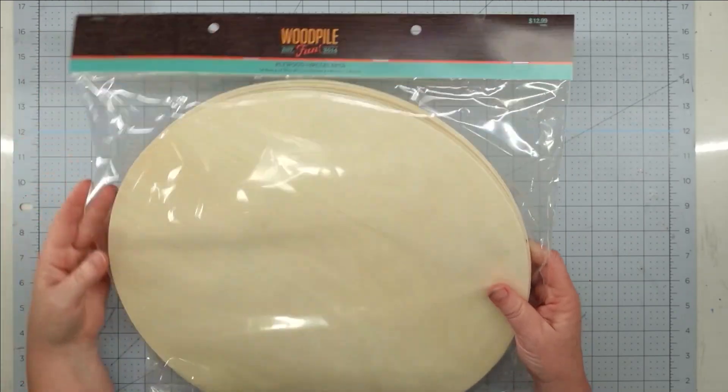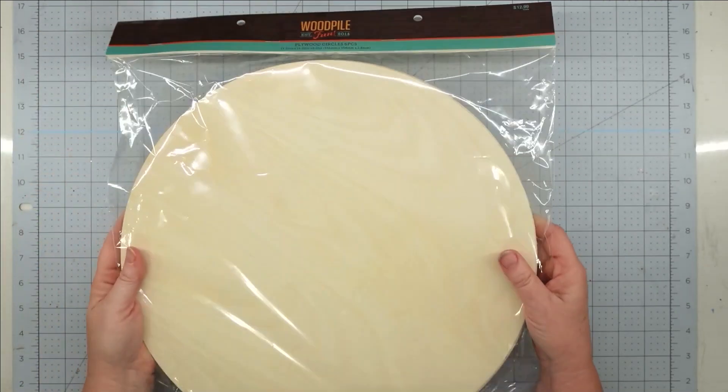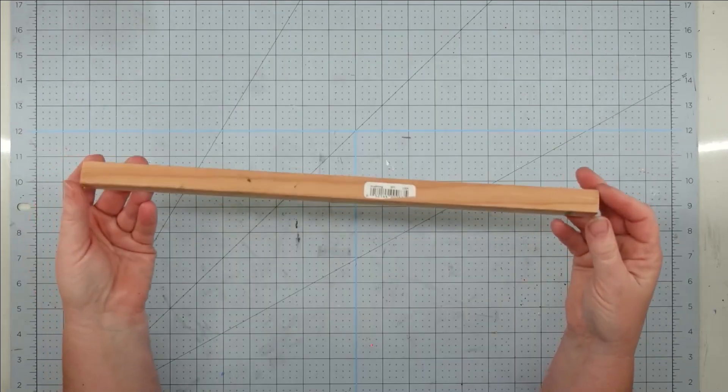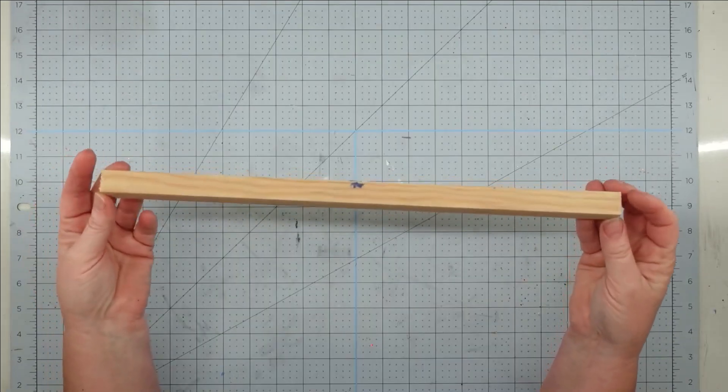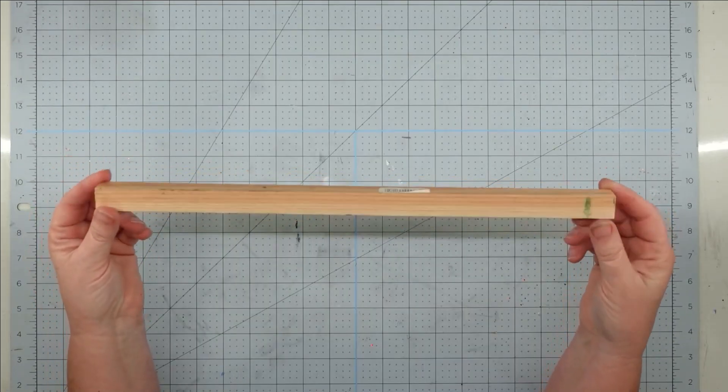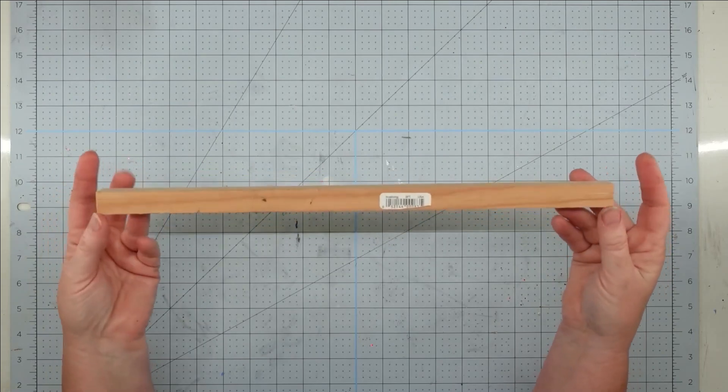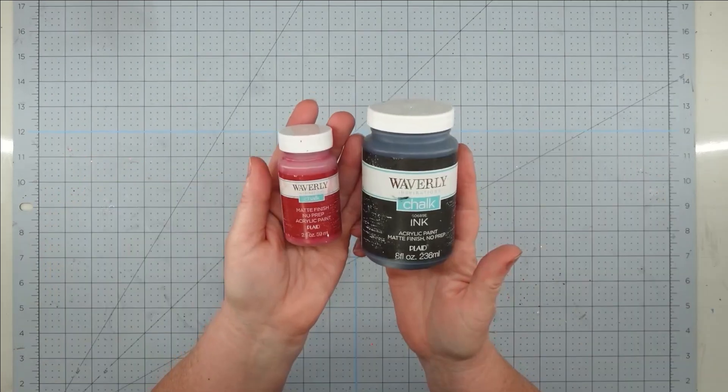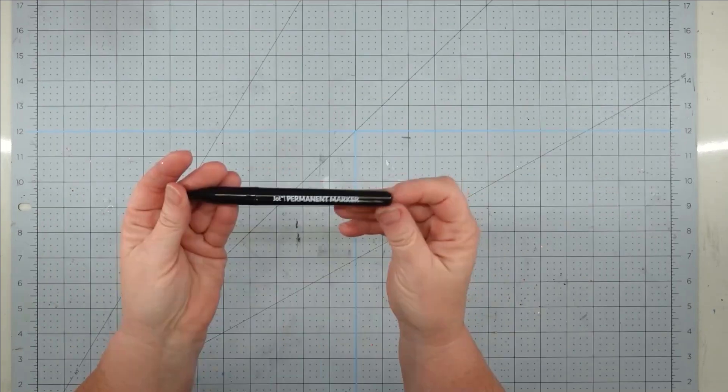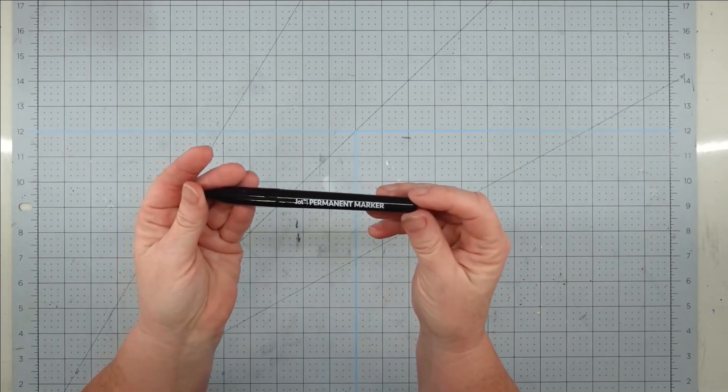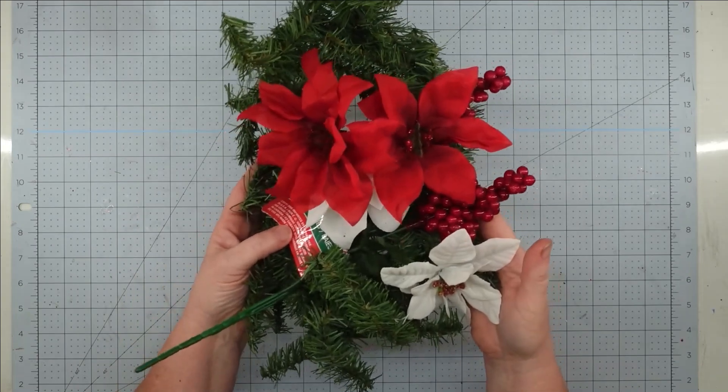I'm also going to use this square dowel. This was part of a tomato stake that I got from Dollar General, but you can also get these at Hobby Lobby. Some Waverly chalk paint in crimson and in ink, a Jot permanent marker, some greenery and some Christmas florals that I had left over from last year.